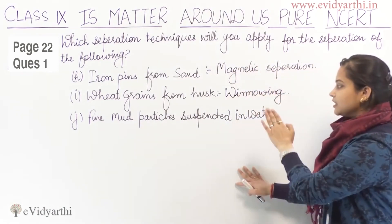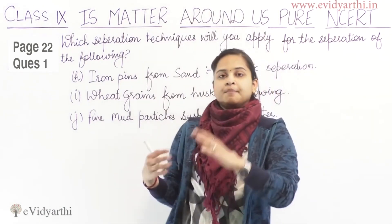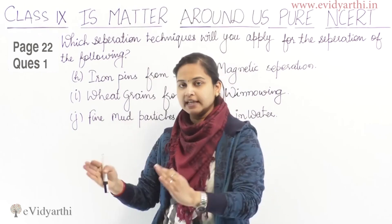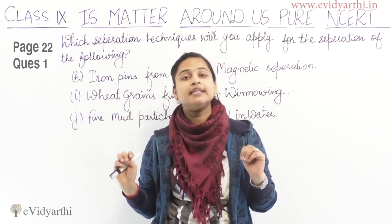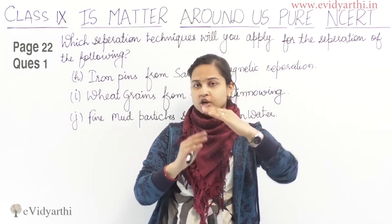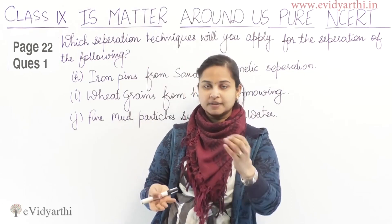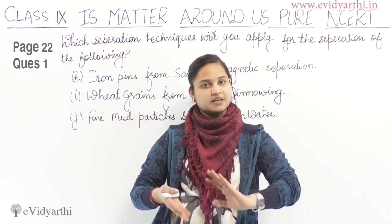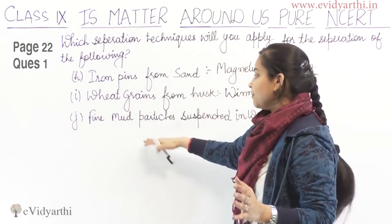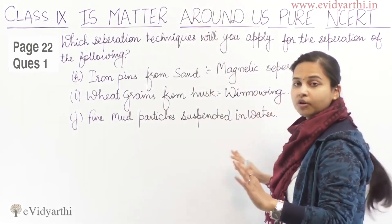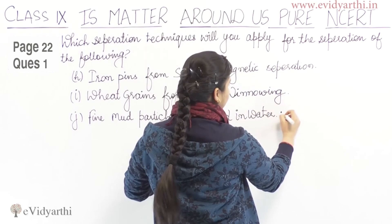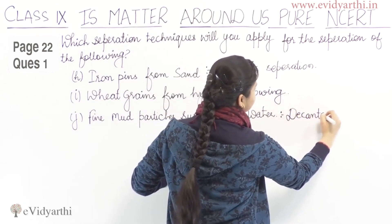Part J: Fine mud particles in suspension with water. Take water and mix mud into it — it dissolves initially, but if you leave it undisturbed for a while, after 10–15 minutes the water rises to the top and the mud settles at the bottom. To separate them, we use decantation — we pour off the water from the top, and the mud remains settled at the bottom. The technique used is decantation.